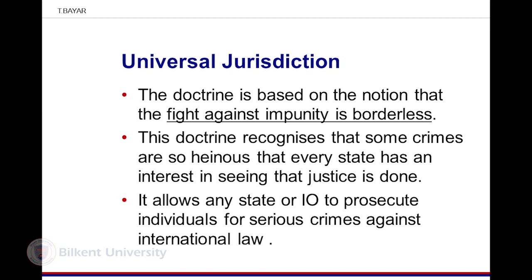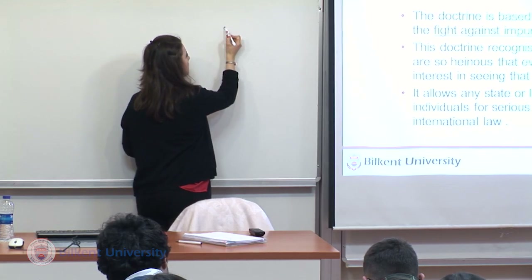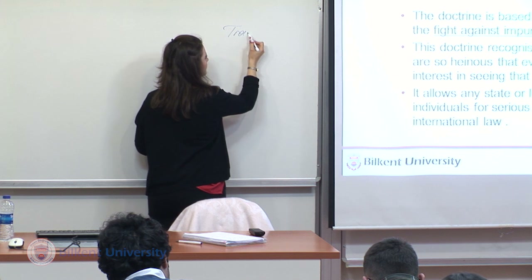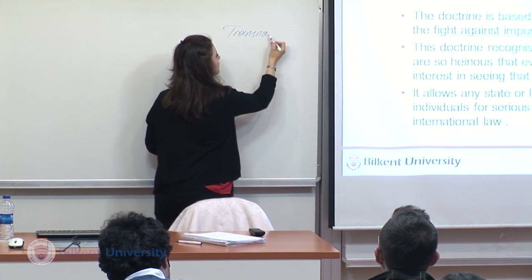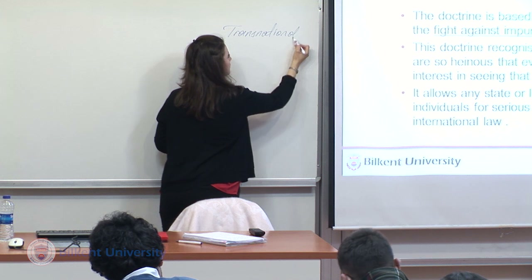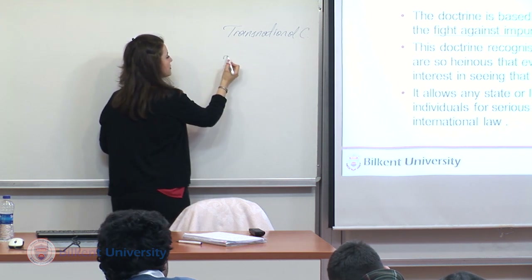The aim of universal jurisdiction is ending impunity. If the fight against impunity is borderless — wherever the crime is committed — then all other states and international organizations have the right to prosecute those crimes. Universal jurisdiction includes various crimes, known as transnational crimes and international crimes.